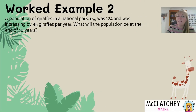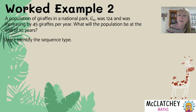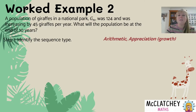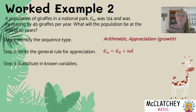Let's look at another worked example. We have a population of giraffes in a national park, GN. Notice the variable changes this time. Its population is 124, and it's increasing by 45 giraffes per year. What would the population be at the end of 10 years? Again, we identify the sequence type. Since it's increasing by a fixed amount of 45 giraffes every year, that's our common difference, making it an arithmetic sequence. The question describes a growth model, so we use the same formula as in worked example one — now using G instead of P as the variable.